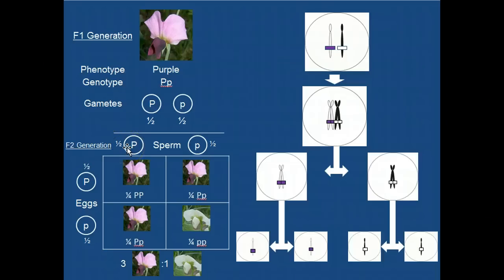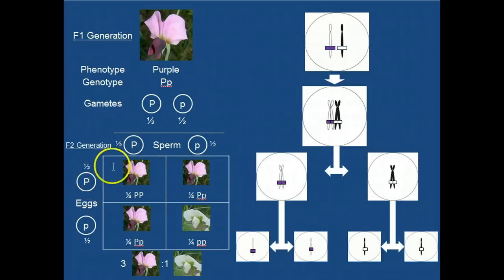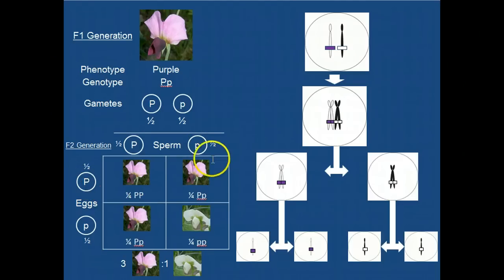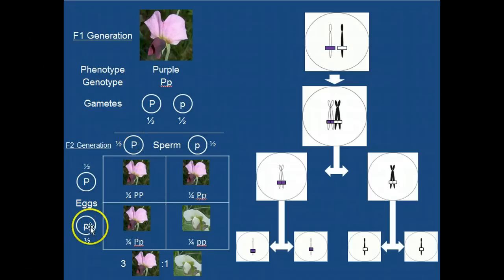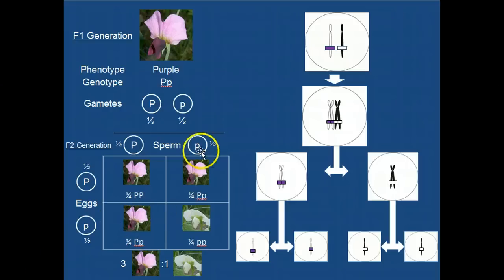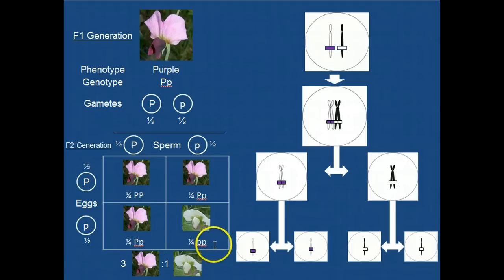If the sperm cell fertilizes this egg cell, it results in individuals who are homozygous dominant. If this sperm cell fertilizes this egg cell, it results in individuals that are heterozygous. If this sperm cell fertilizes this egg cell, all these individuals will be heterozygous. If this sperm cell fertilizes this egg cell, then all of the individuals will be homozygous recessive.